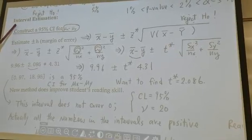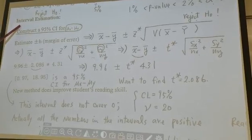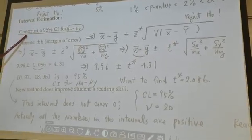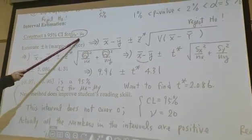Next we have just done hypothesis testing. Let's look at how we can make statistical inference through interval estimation by constructing a 95% confidence interval for μx minus μy.